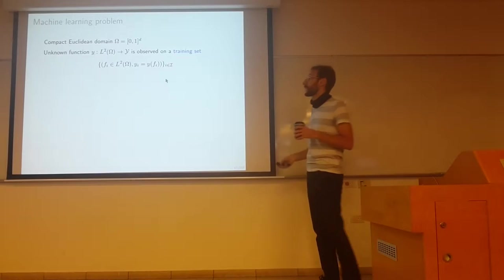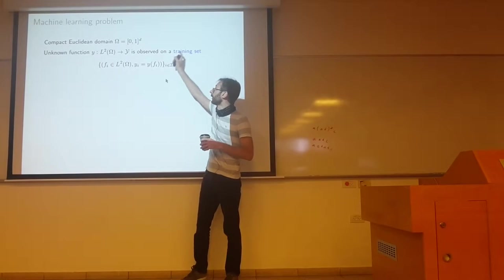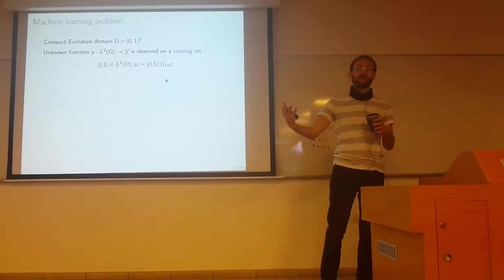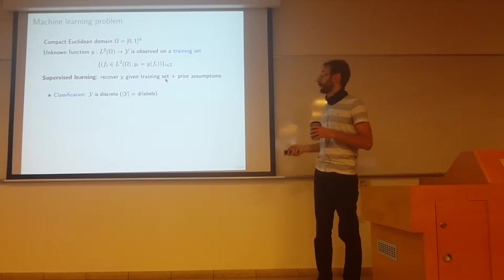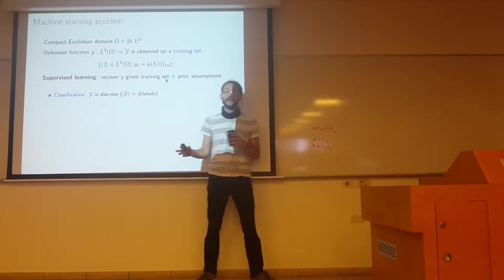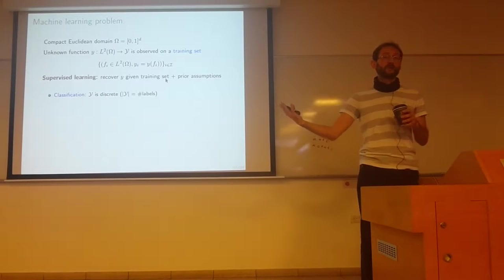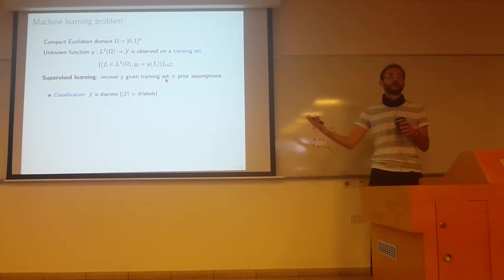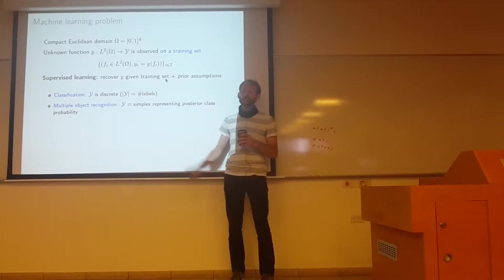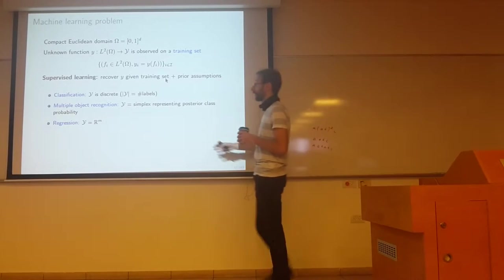To make it less abstract, think of image analysis. In this case, omega is the unit square, f are functions on omega which will be images, and the functional takes an image and produces something. This space y could be different things. For example, y could be a discrete space with cardinality equal to the number of labels, so you produce a number between one and let's say a thousand, which is the label of the object class.